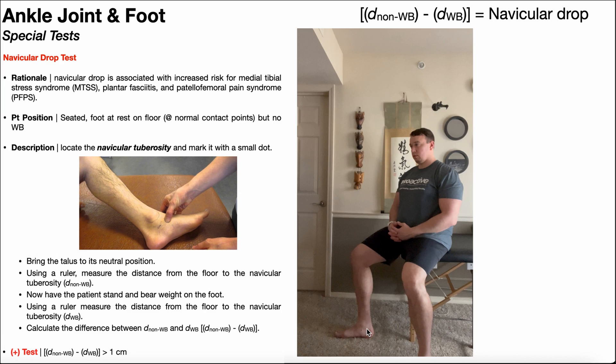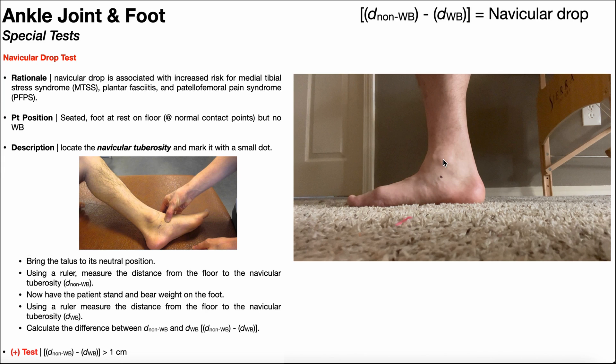The foot is essentially just sitting on top of the carpet fibers, but no weight is being borne through that foot. Now, in this non-weight-bearing position of the foot, we're going to locate the navicular tuberosity and mark it with a small dot, preferably with permanent marker so we can see it easily in the next few steps.